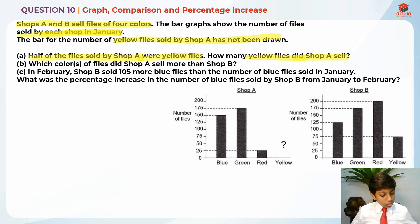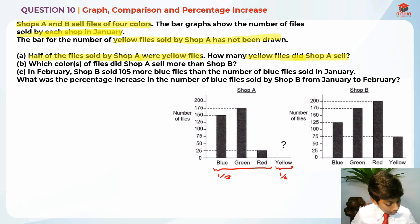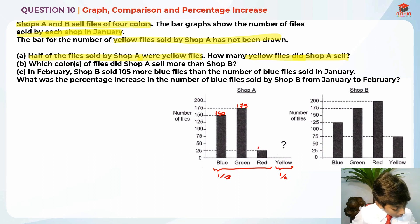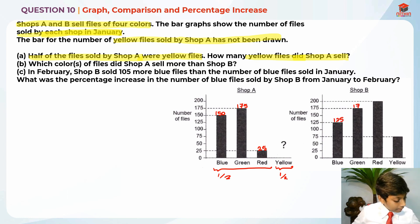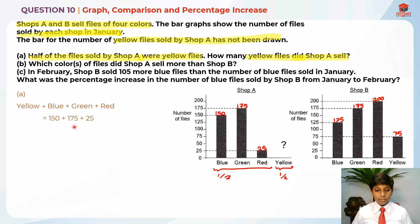If yellow was half, that means blue plus green plus red should be the other half. So I'm going to write down the value of each: blue is 150, green is 175, red is 25. For shop B: 125 for blue, 175 for green, 200 for red, and 75 for yellow. So to find yellow files, it's blue plus green plus red: 150 + 175 + 25 = 350. That is the answer for part A.